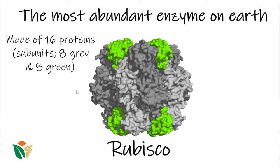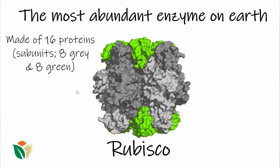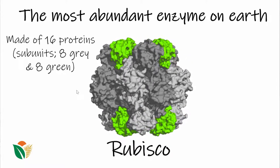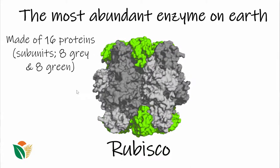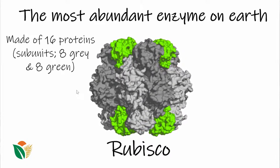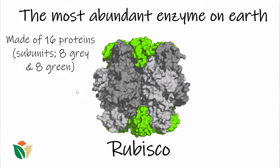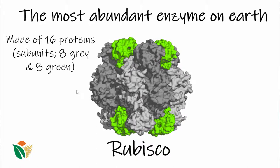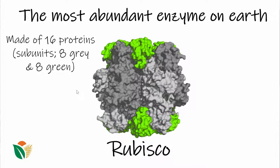Here is the structure of Rubisco. It doesn't look like a Pac-Man, it doesn't look like a Rubik's Cube — it's actually quite complex. It's quite a large enzyme complex, because it's made of 16 different proteins. We have subunits which are grey here, and then green subunits at the top and the bottom. Together, these 16 proteins constitute 4,800 amino acids to make up this enzyme called Rubisco.